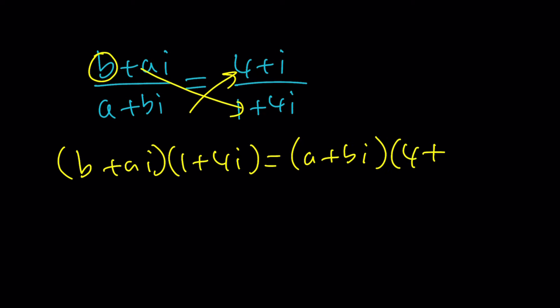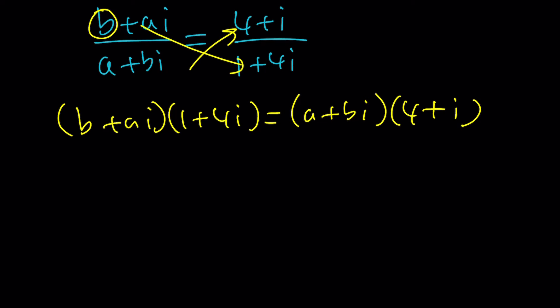If you do it that way it's a little easier. If you distribute you're going to get B plus 4 B I and plus A I. When you multiply this you're going to get 4 A I squared which is minus 4 A.